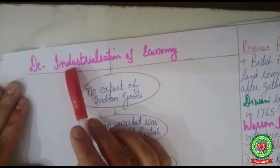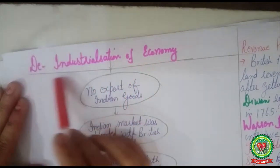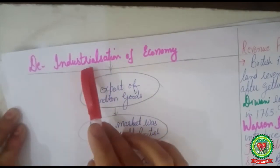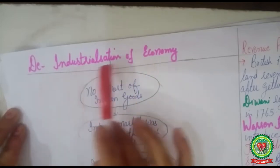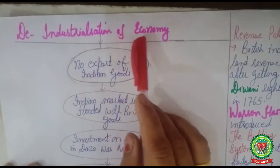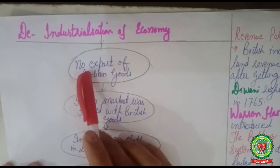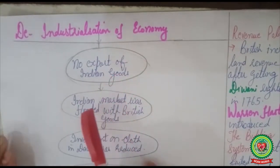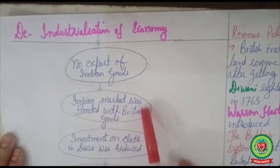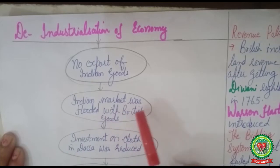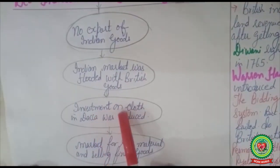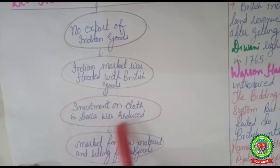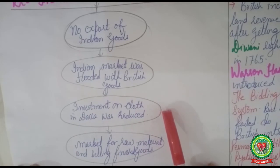Deindustrialization meant there was no setting up of industries; the government showed no interest in industrialization in India. There was total negligence of industrialization. As a result, there was no export of Indian goods, and Indian merchants had no place in the British market. The Indian market was flooded with British goods in every sector. Investment in cloth in Dhaka — known as the Manchester of the cloth industry — was reduced because people started buying machine-made British clothes instead of Indian clothes.